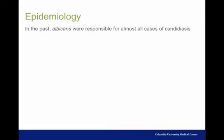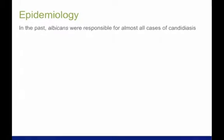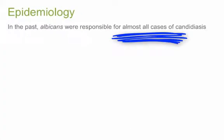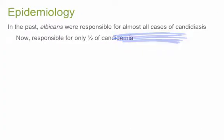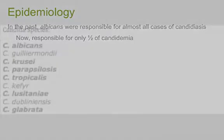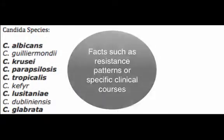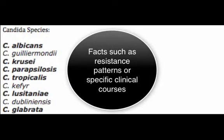Previously, Candida albicans was the causative organism in almost all cases of candidiasis. While albicans is still extremely important, non-albicans species now account for half the cases of candidemia. You will need to familiarize yourself with a few basic facts about the bolded non-albicans species on this list.